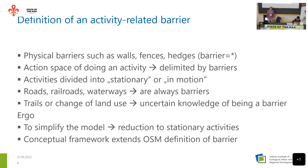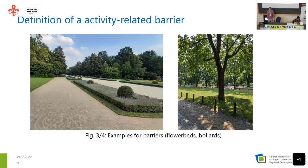The conceptual framework extends the definition of barriers beyond what OpenStreetMap already defines. For example, a flower bed could represent a land use change and may not be suitable for playing football across. Wooden bollards, depending on the activity, could also act as a barrier — though not for all activities. These examples illustrate the extended barrier concept.